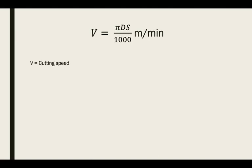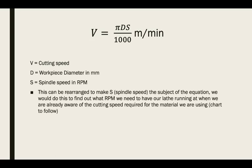So V is the cutting speed, D is the workpiece diameter in millimeters, and S is the spindle speed in revolutions per minute. This equation can be rearranged to make S the subject. We would do this to find out what RPM we need the lathe running at when we already know the required cutting speed for the material. There is a chart to follow showing cutting speeds for different materials. The rearranged equation is: spindle speed equals 1000 times the cutting speed, divided by pi times diameter, giving the spindle speed in revolutions per minute.